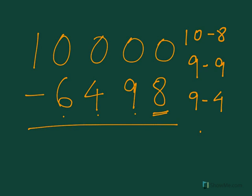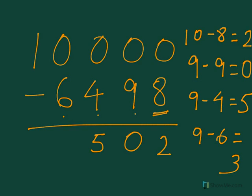So here: 10 minus 8, 9 minus 9, 9 minus 4, and 9 minus 6. 10 minus 8 is 2, 9 minus 9 is 0, 9 minus 4 is 5, and 9 minus 6 is 3. So the answer will be 3502.